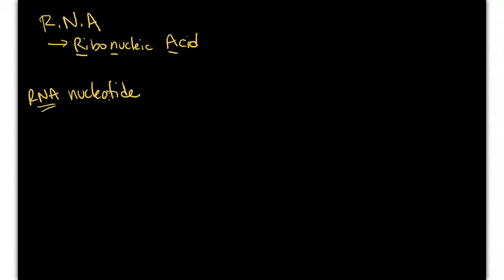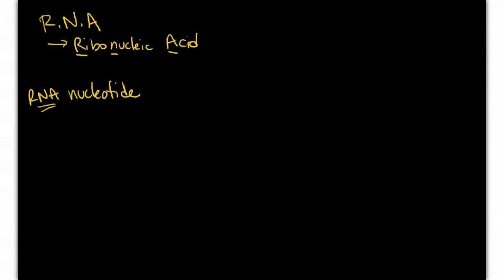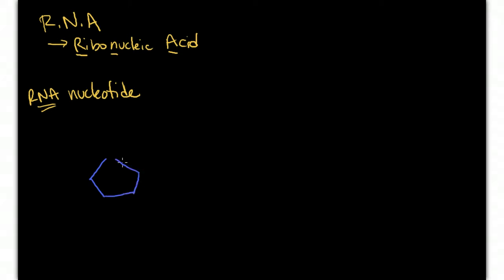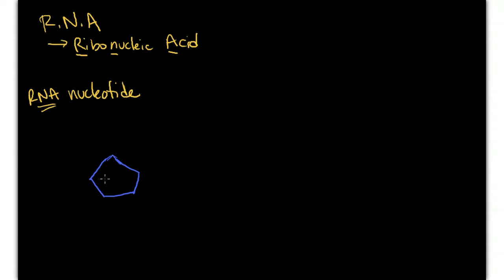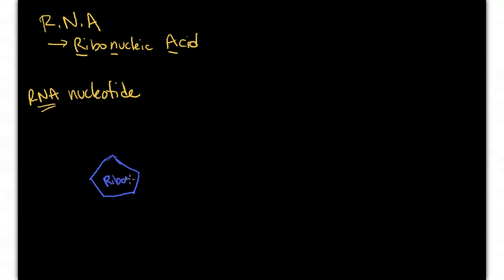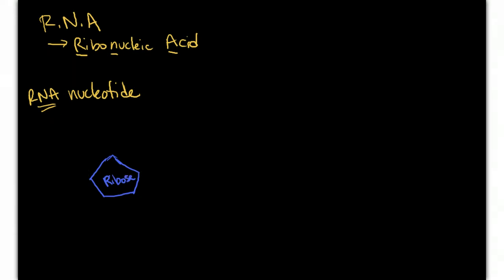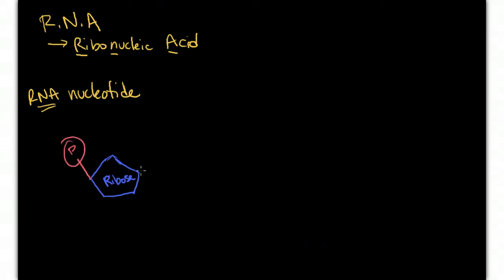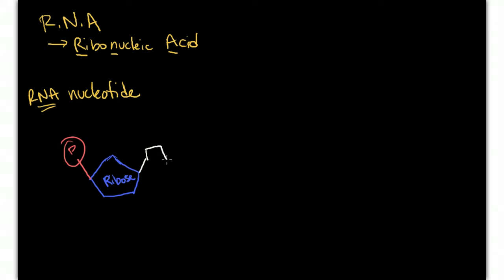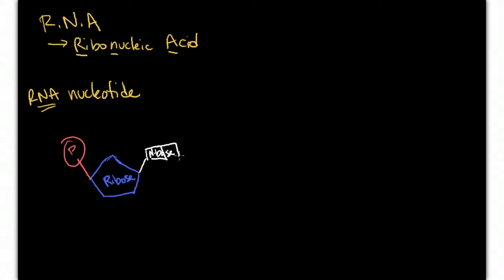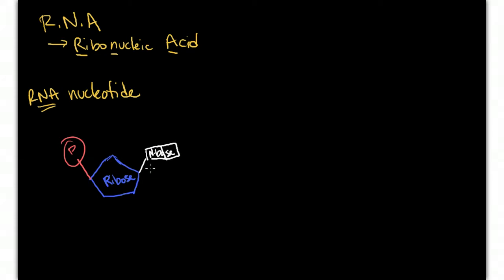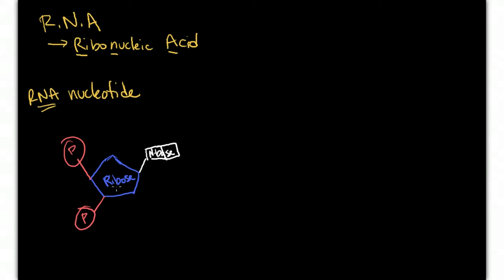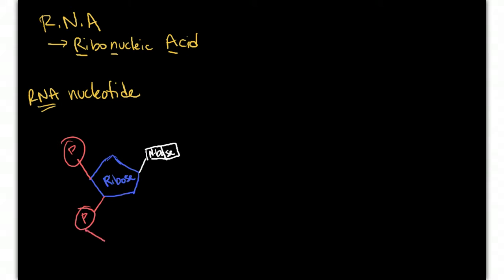We want to make sure we understand what goes into an RNA nucleotide. It's going to look very similar to DNA, but there's a key difference. Instead of deoxyribose as our sugar, we have ribose as our sugar. So that's one very big difference. Secondly, there's a phosphate and there is a nitrogen base. So it actually looks very similar to our DNA molecule with one very big difference, whereas DNA has deoxyribose and RNA has ribose.